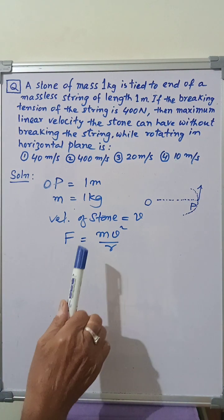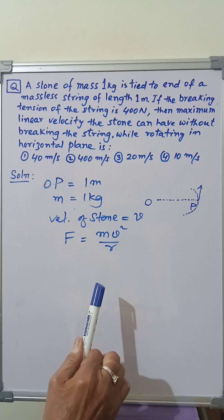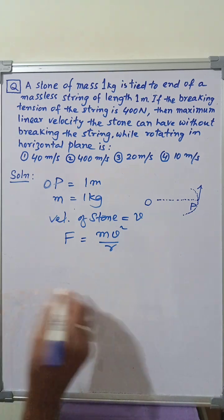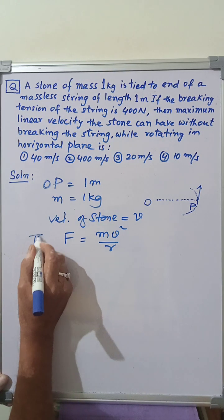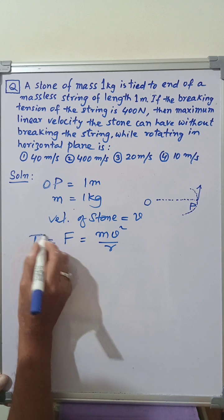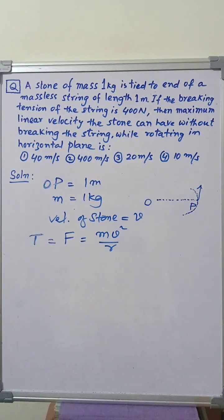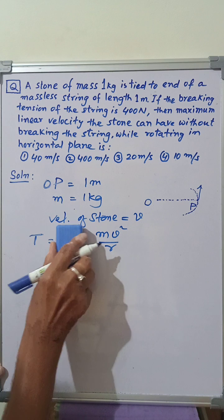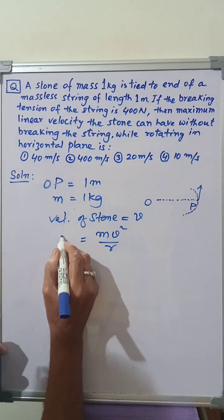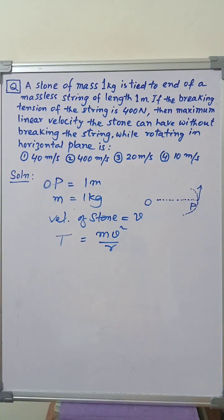Now, this necessary centripetal force is provided by the tension in the string. Therefore, we can write T is equal to F which is equal to M V square by R, or tension in the string is equal to M V square by R.